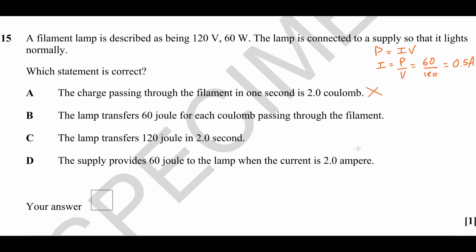The lamp transfers 60 joules for each coulomb passing through the filament. Now a joule per coulomb is a unit that is equivalent to a volt, because a volt is defined as the energy per unit charge. We know the voltage here to be 120 volts, so actually the joules per coulomb would be 120, not 60. So statement B is incorrect.